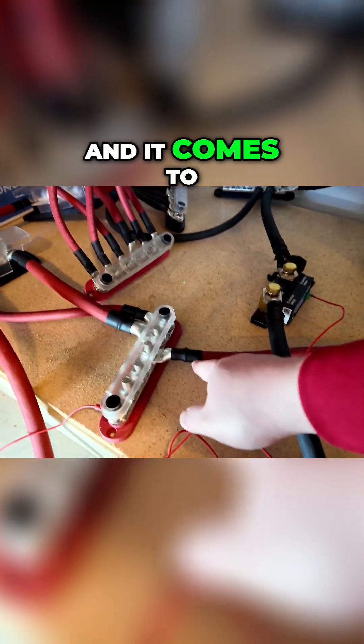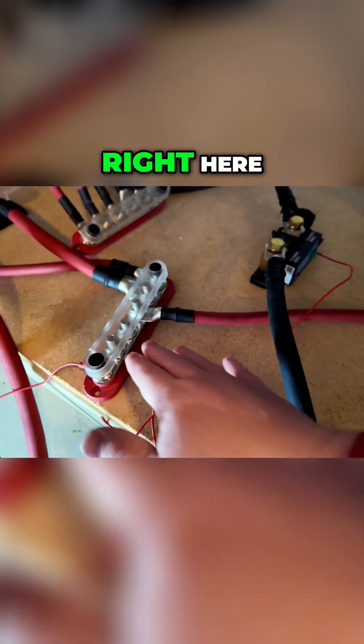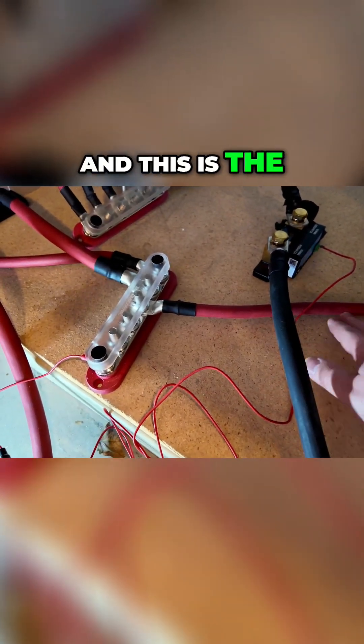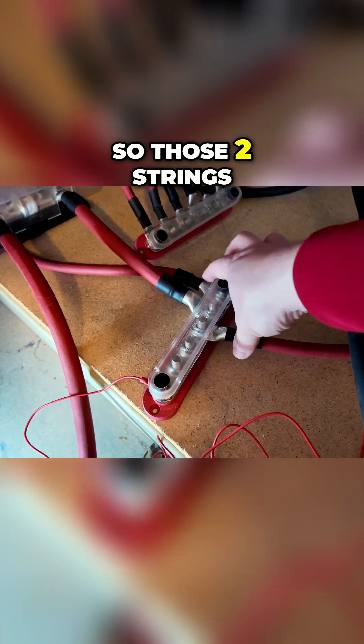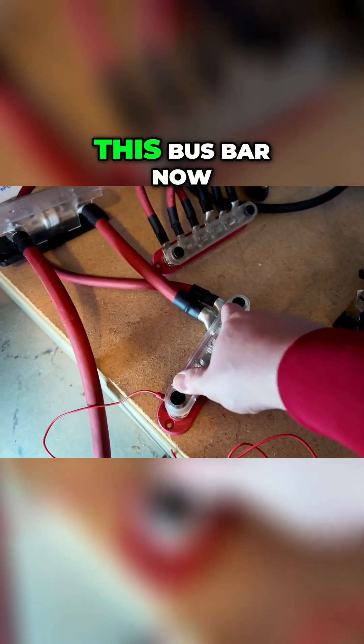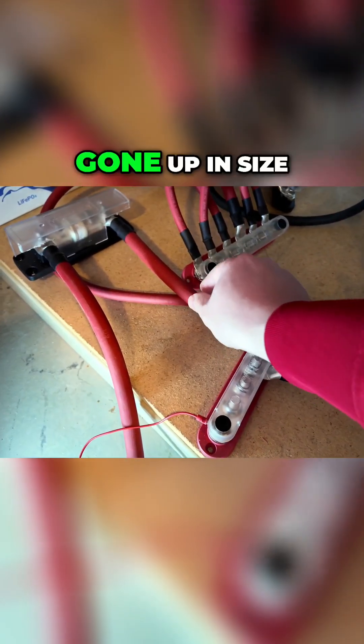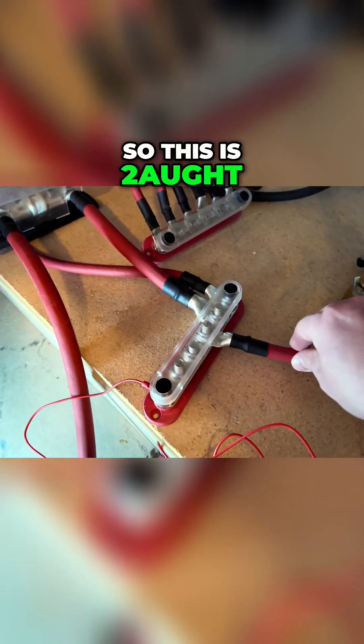It comes to this next bus bar right here. This is the power coming in from the other battery pack over here. So those two strings here are combined on this bus bar. Now notice that we've gone up in size - this is two-aught gauge wire.